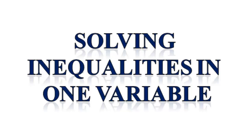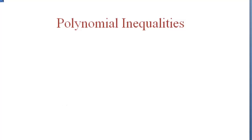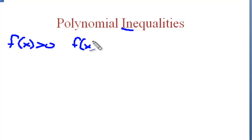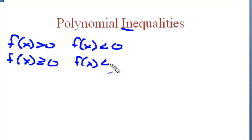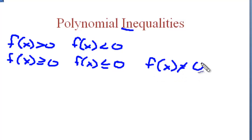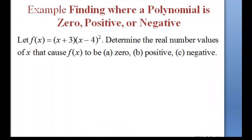In this video, we will be solving inequalities in one variable and learning how to make sign charts to solve the problems. Let's start off by defining what a polynomial inequality is. An inequality is anything that is not an equality — f(x) greater than 0, less than 0, greater than or equal to 0, less than or equal to 0, or simply not equal to 0. All of these are inequalities. Let's find where a polynomial is 0, positive, or negative.